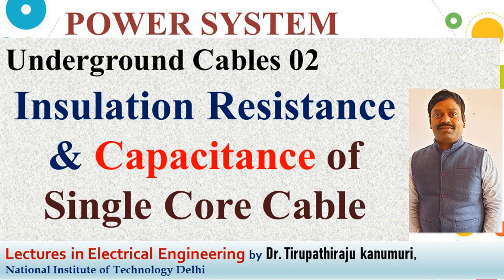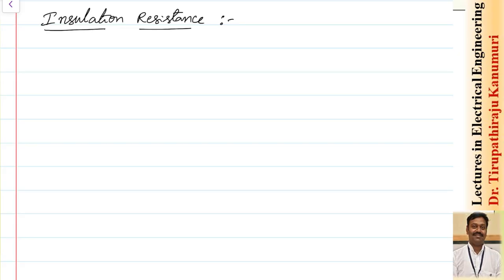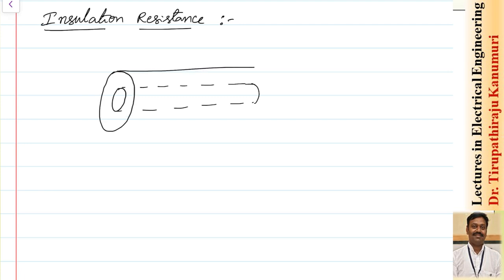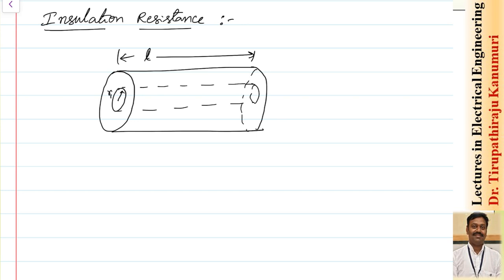Today we are going to discuss insulation resistance and capacitance of a single core cable. A cable has a conductor, and above the conductor there is a sheath. Between these two, it is covered by an insulating material. The length of the cable is L, the inner radius of the conductor is R1, and the radius up to the sheath is R2.